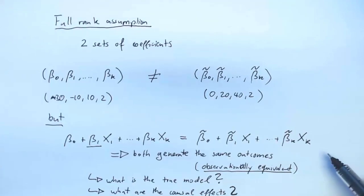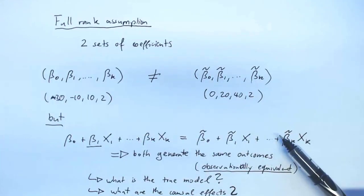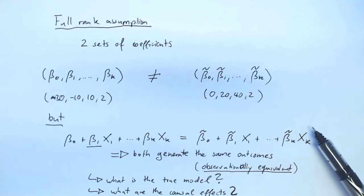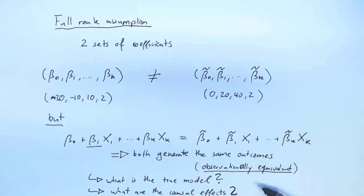And so the full rank assumption basically just says these kind of situations should never occur. Because if they occur, then I get confused about what is the true model that I'm actually estimating, and we don't want that to happen.